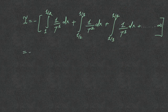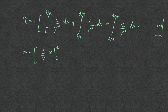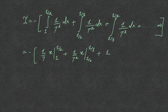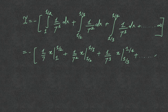On integrating we get minus, as it is: 1 upon 7 times x from 1 to 1/2, plus 1 upon 7 squared times x from 1/2 to 1/3, plus 1 upon 7 cubed times x from 1/3 to 1/4, plus so on up to infinity.